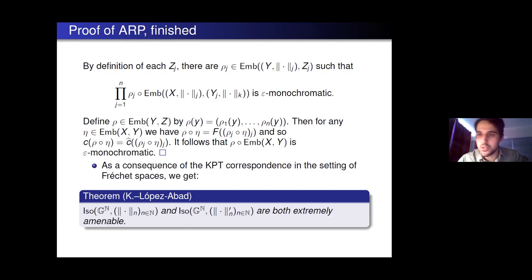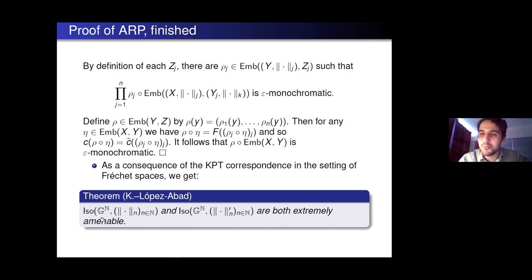That finishes — modulo some details I left out — the proof of the approximate Ramsey property. As a consequence, we get some new examples of extremely amenable groups. The first space was the Fréchet space relative to all graded finite-dimensional Fréchet spaces, and the second was for all of them without requiring the sequence of semi-norms to be increasing. If you look at both of these spaces with the standard analog of the strong operator topology, then both of these turn out to be extremely amenable.